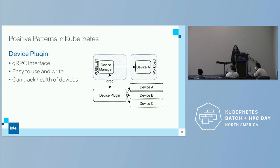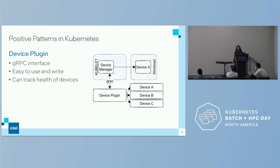Let's talk about some positive patterns in Kubernetes, because there are things in the cloud we want to keep. One of them is device plugins. The device plugin is very simple: you have a device manager, devices on the plugin on the nodes, and various devices that get lifted into pods for you to use. It's really neat, easy to write, easy to use. You have gRPC, it's pretty quick, and you can usually track the health of the devices.